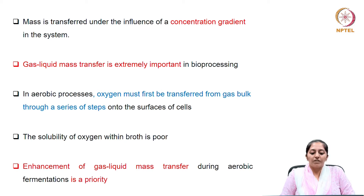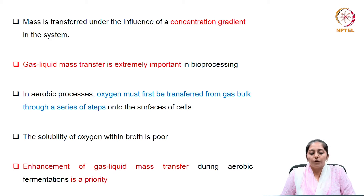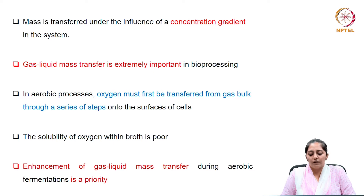Gas-liquid mass transfer is extremely important in bioprocessing. In aerobic processes, oxygen must first be transferred from the gas bulk through a series of steps onto the surface of cells. The solubility of oxygen within the broth is very poor. Generally these broths are aqueous systems, and oxygen solubility in aqueous systems is poor. Enhancement of gas-liquid mass transfer therefore becomes the crucial step, especially in aerobic fermentations.